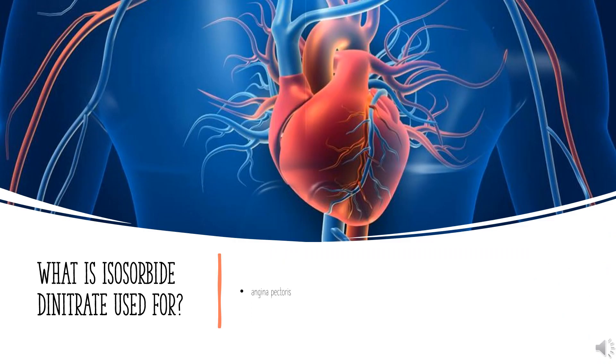What is isosorbide dinitrate used for? It is used for the prevention of angina pectoris due to coronary artery disease.